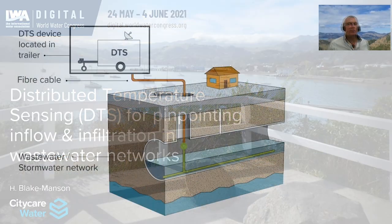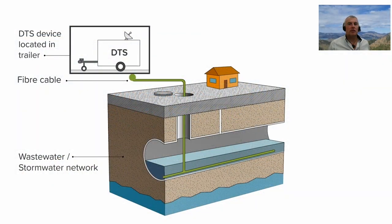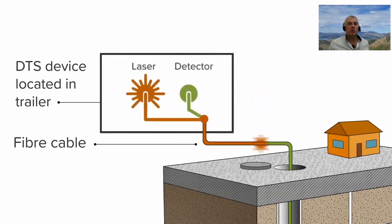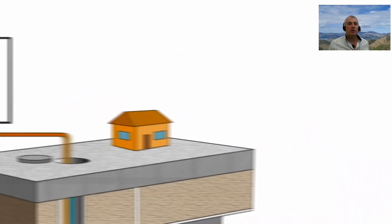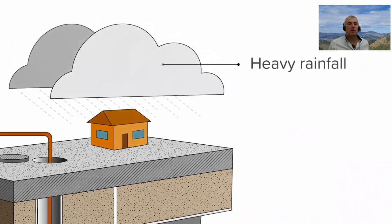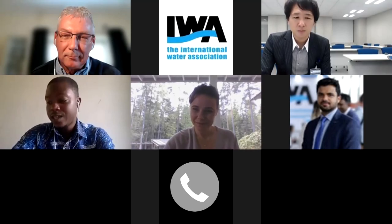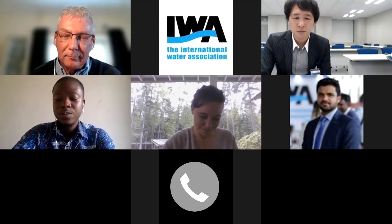The fibre optical cables installed in the wastewater pipe are pulsed with a laser. The detector end of the DTS unit captures the signal, records and stores it, offering new insights into optimised asset management.